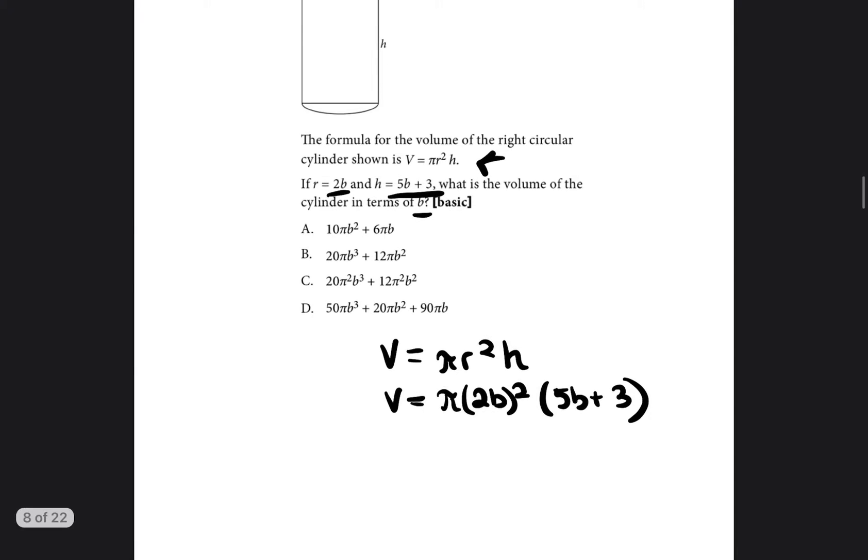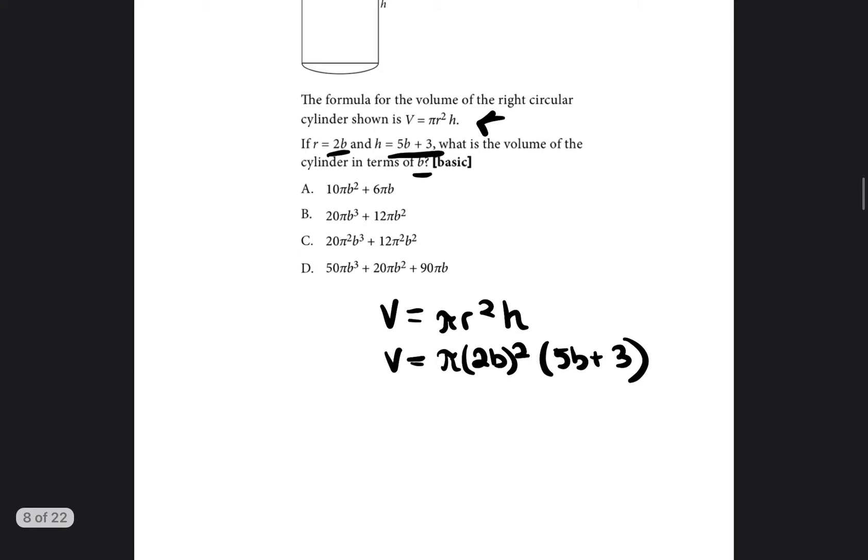So let's go ahead and solve this. We're going to leave the pi out here. The 2b is going to be squared, so 2 squared is 4, b squared is b squared. And then we're going to bring down the 5b plus 3.